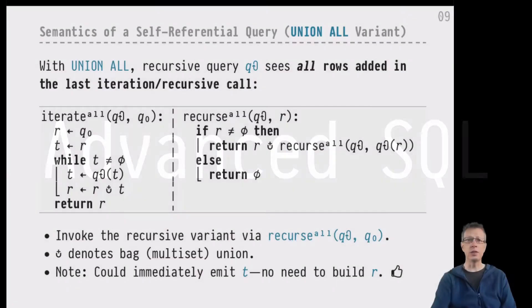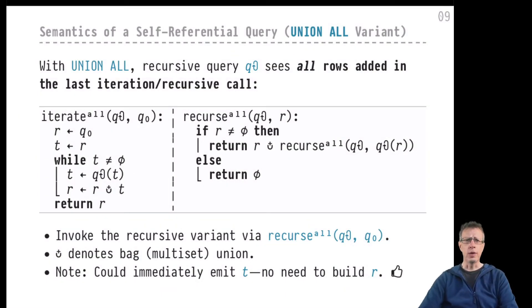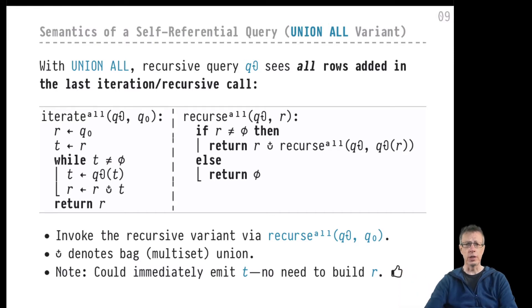Hi, this is at one SQL, and it's the continuation of our discussion of recursion in SQL. There are two variants of the recursive common table expressions: the union variant, the set-based variant that we have discussed up to now, and the bag variant, the union ALL variant that we will look at more closely now.